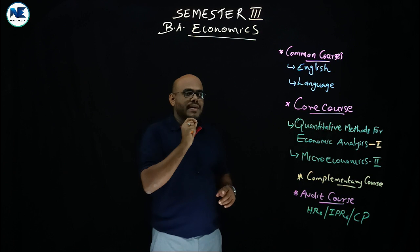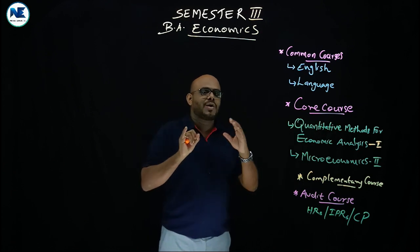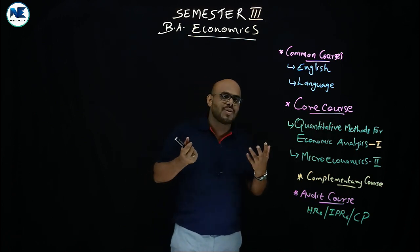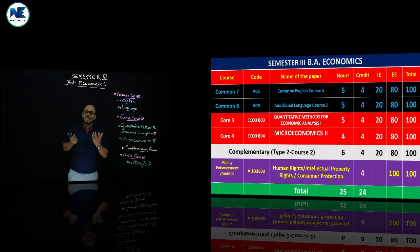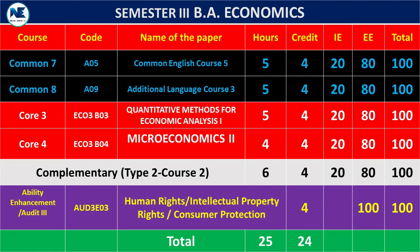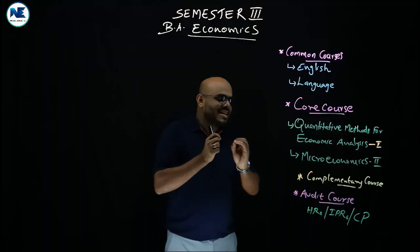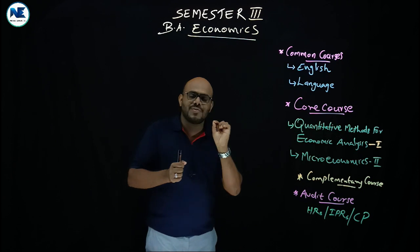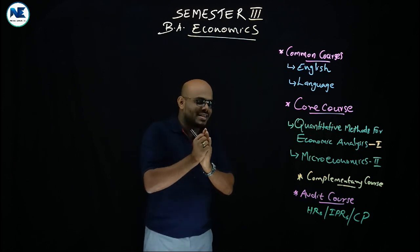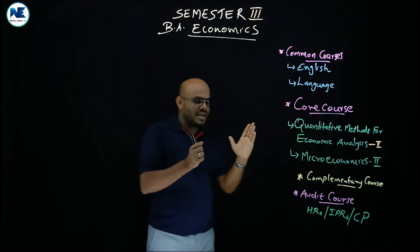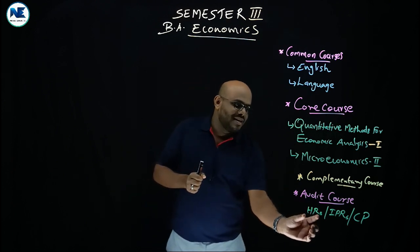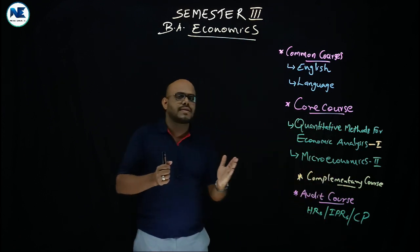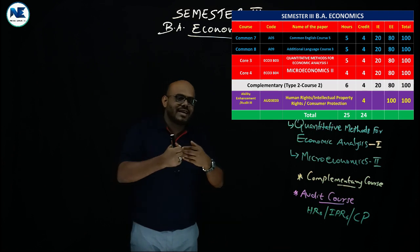Another important component is the audit (ODT) course. In Semester 1, Environmental Studies is the ODT course, or an Ability Enhancement program. In Semester 2, Disaster Management is covered. In Semester 3, you can select one ODT course from options such as Human Rights, Intellectual Property Rights, or Consumer Protection. These courses are available and the exam is up to 100 marks.